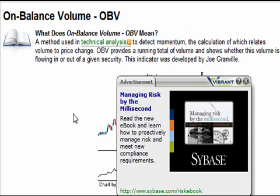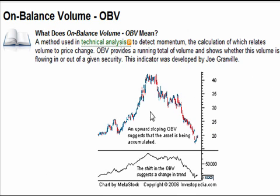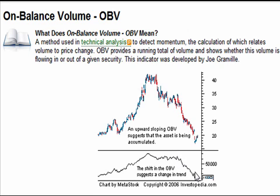I'm showing this from Investopedia, so a free plug to them. Rising price, rising OBV — OBV up, price up — and that should show accumulation. So the opposite is true for a decline. While price is declining, OBV is not very negative at first, but then it does become negative. So this is real selling right here, because there's real volume declining.